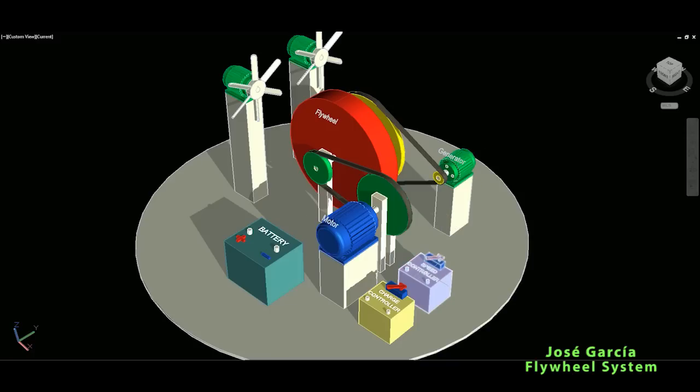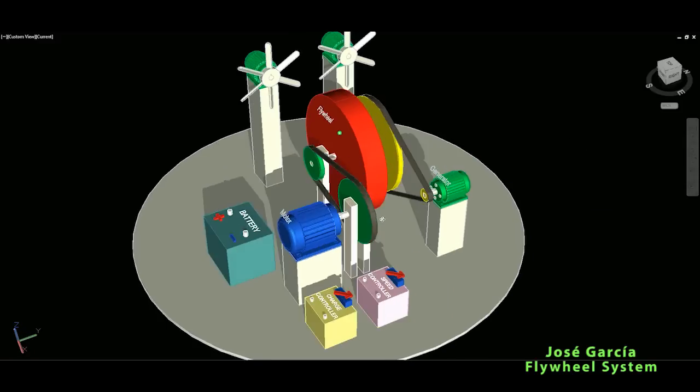And there are two speed and charge controllers not to take too much current for the motor and to control the charging of the battery itself. So that's the whole setup, very similar to the Chas Campbell flywheel system.